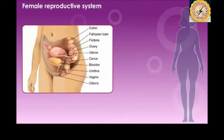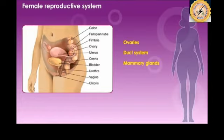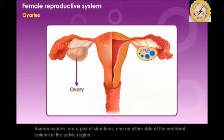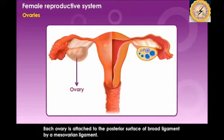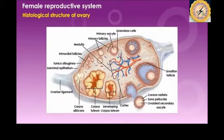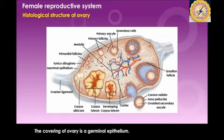The female reproductive system includes the ovaries, duct system, and mammary glands. The human ovaries are a pair of structures, one on either side of the vertebral column in the pelvic region. Each ovary is attached to the posterior surface of the broad ligament by the mesovarian ligament. The covering of the ovary is known as the germinal epithelium.